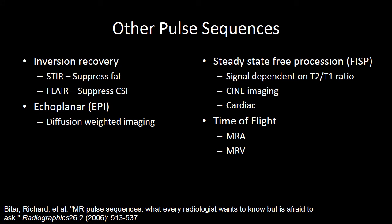There are multiple other pulse sequences beyond the scope of this screencast. One type is echo planar imaging, where you are actually varying your phase encoded gradient in a more continuous way, allowing you to achieve faster acquisition times. Diffusion weighted imaging is a common type of imaging where we're using echo planar imaging. Steady state free precession imaging is a type of gradient echo imaging in which we don't spoil the transverse magnetization, but achieve a balance in our transverse magnetization, resulting in very rapid acquisition capabilities. The signal becomes dependent not on T1 or T2, but a ratio of T2 to T1. Steady state free precession imaging is very nice for CINE imaging and is also commonly used for cardiac imaging.